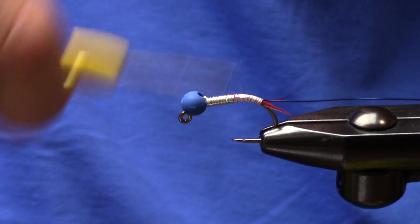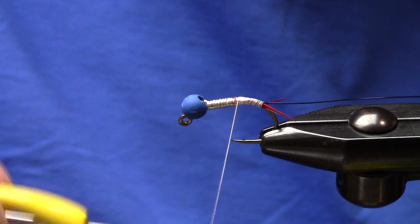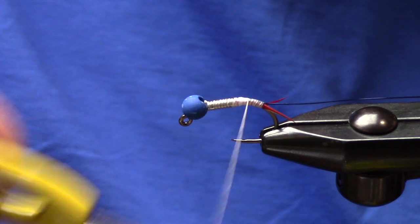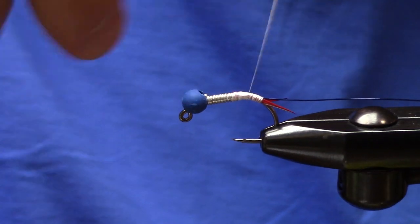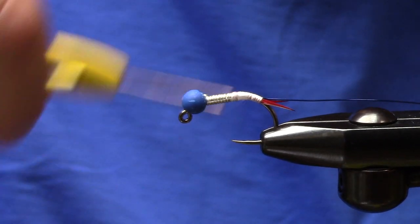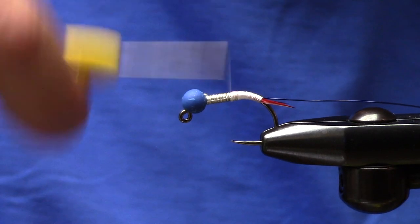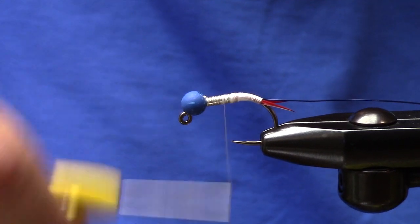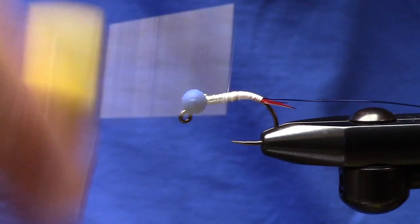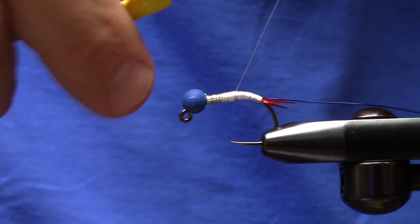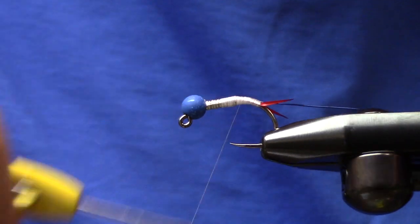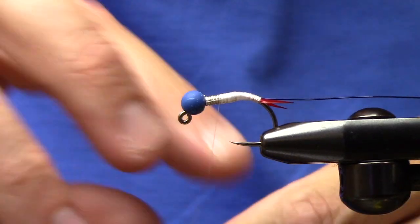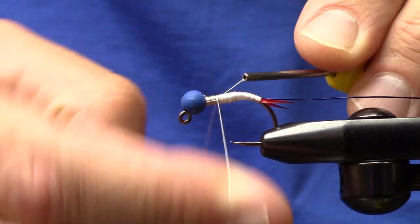From there we're going to go ahead and build up a nice thread base so that this is as smooth as possible. Using 50, it's going to take you a hot second, so just stick with it - you will get there eventually. I will continue my thread base forward until where I'm going to put in my thorax, my legs, all that stuff. I'm just trying to make this as smooth as possible, so you can see we have a nice ramp built up now. Just to get this kind of out of my way, throw a couple half hitches in there.